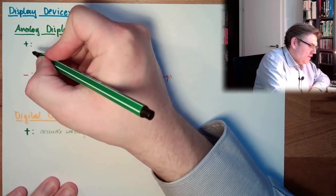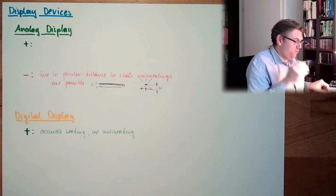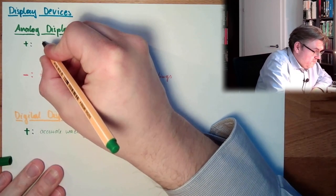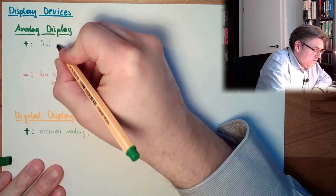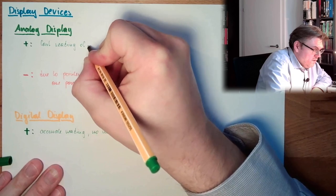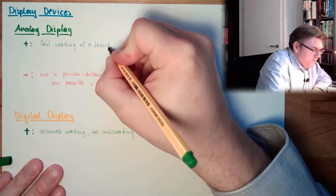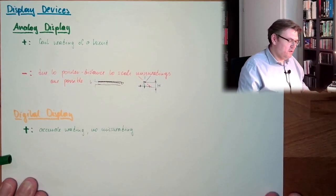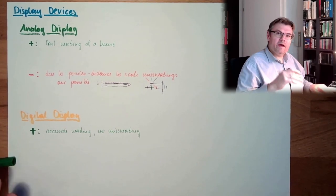Here, on the plus side, we said. Trends are visible. Fast reading of a trend. So, if the value is growing, I can read.